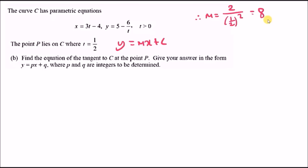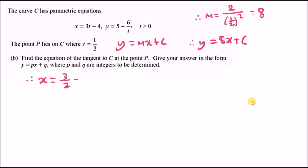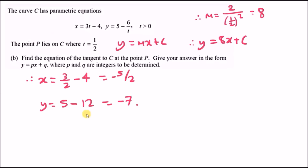This gives gradient m equals 8, so the equation is y equals 8x plus c. To find c, plug t equals half into the parametric equations: x equals 3 times half minus 4 gives negative 5 over 2, and y equals 5 minus 6 over half gives negative 7.